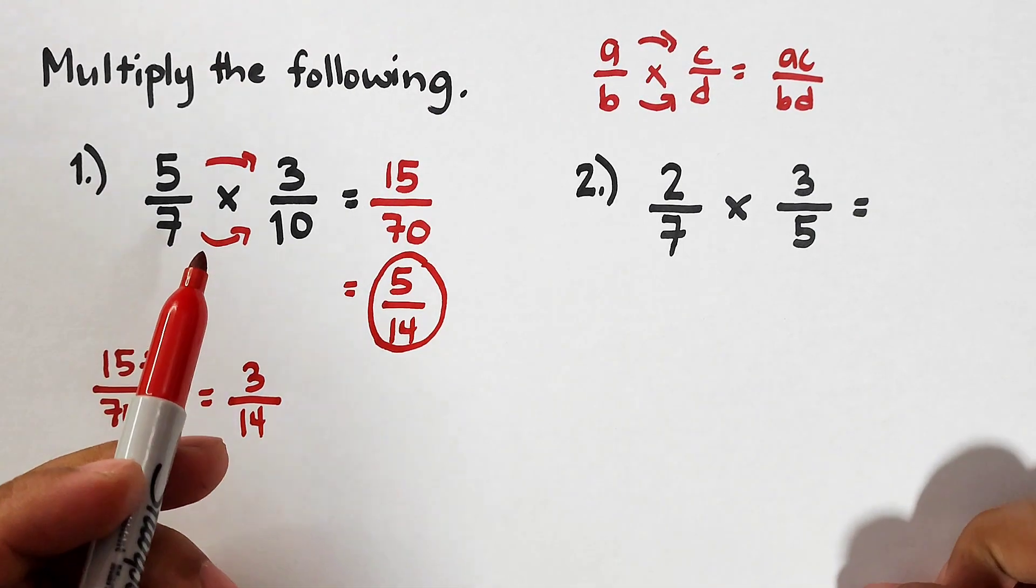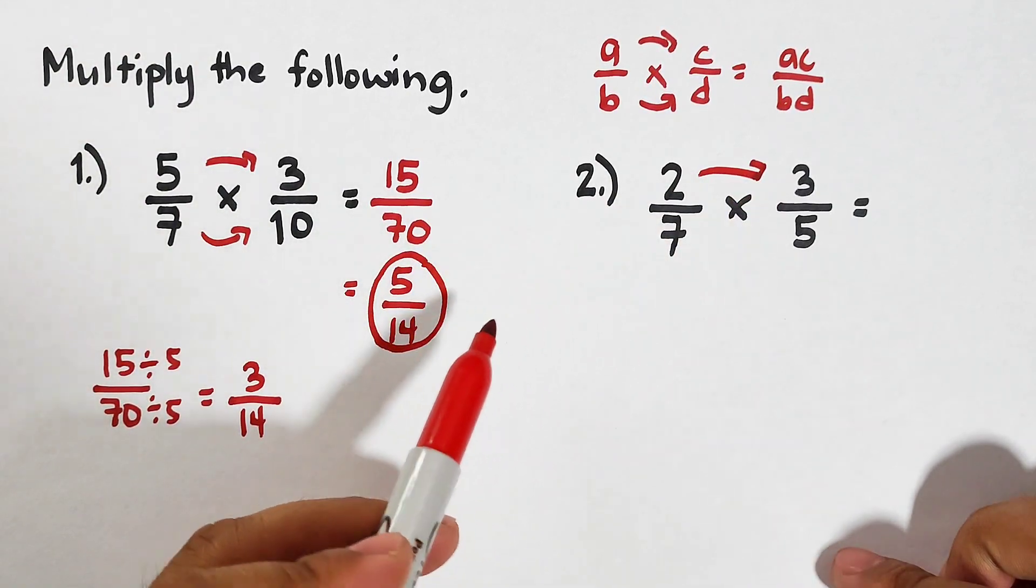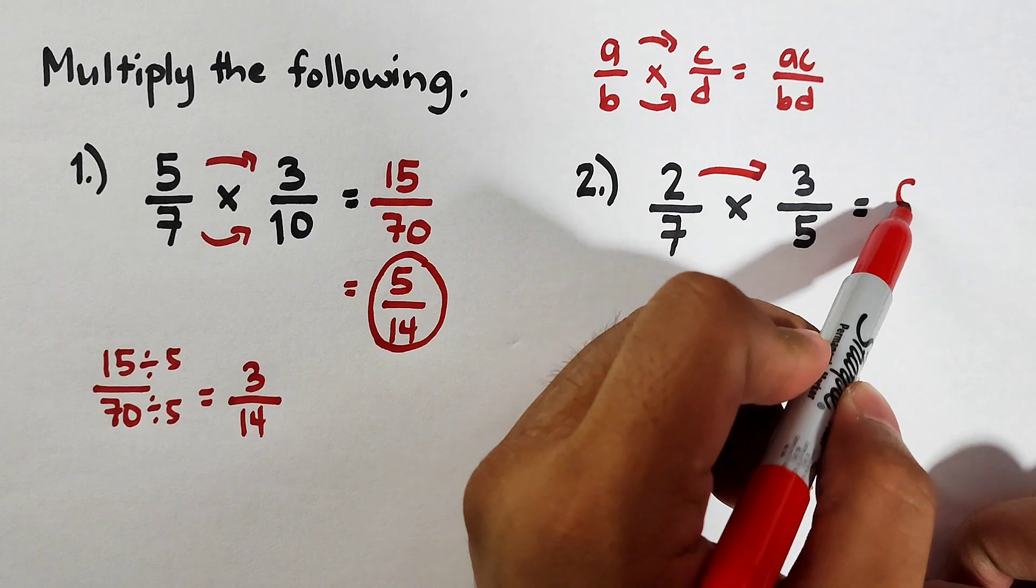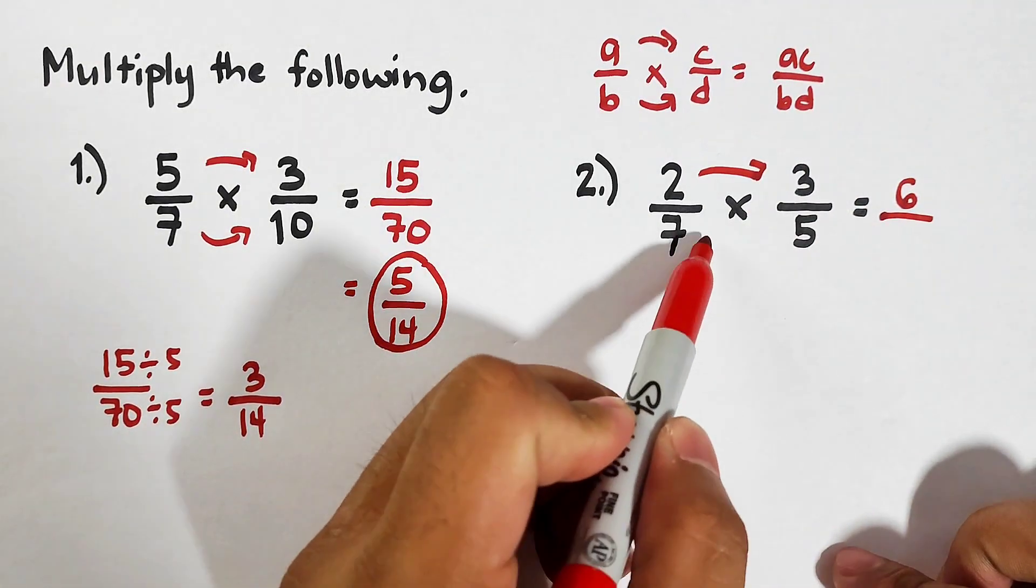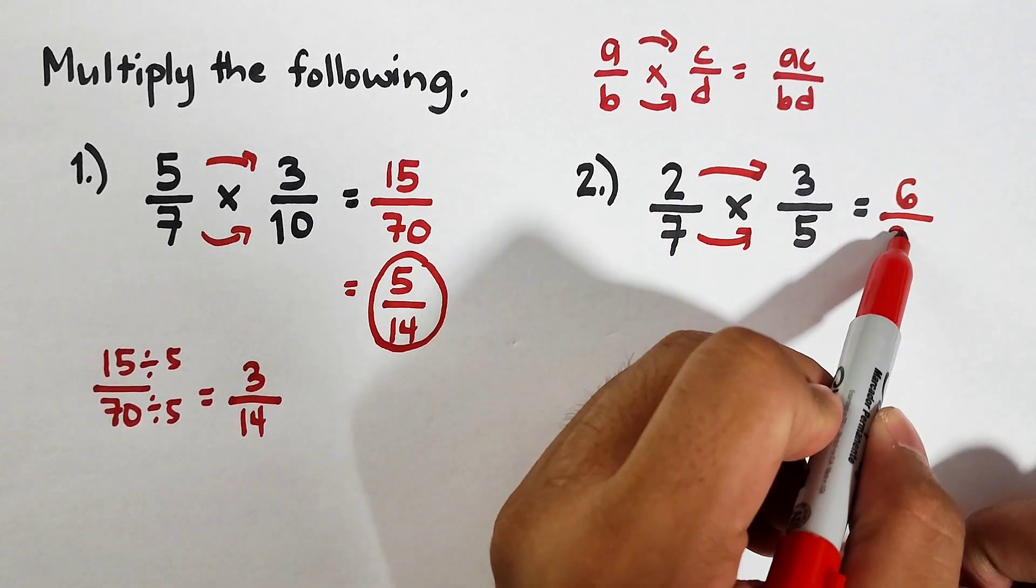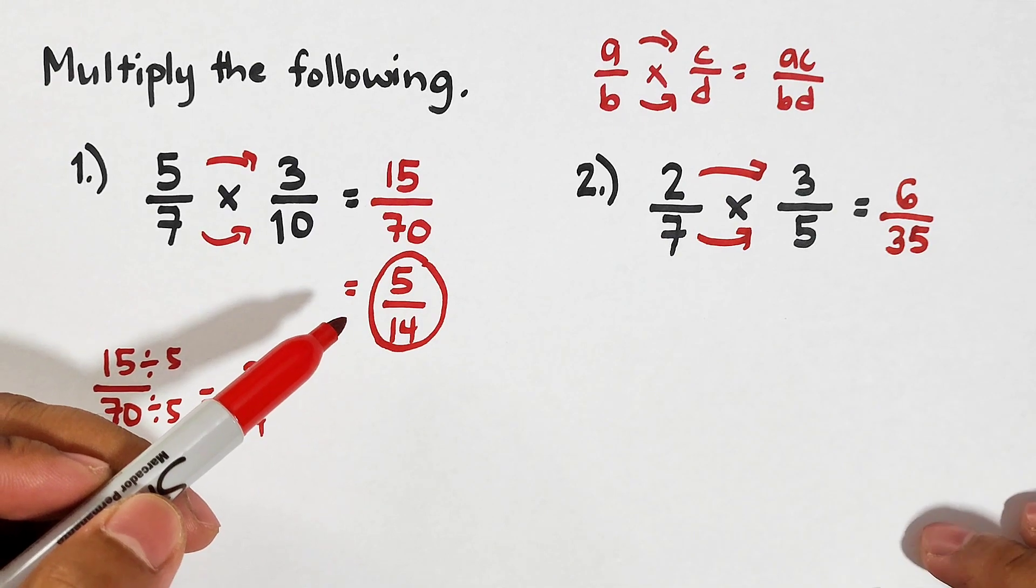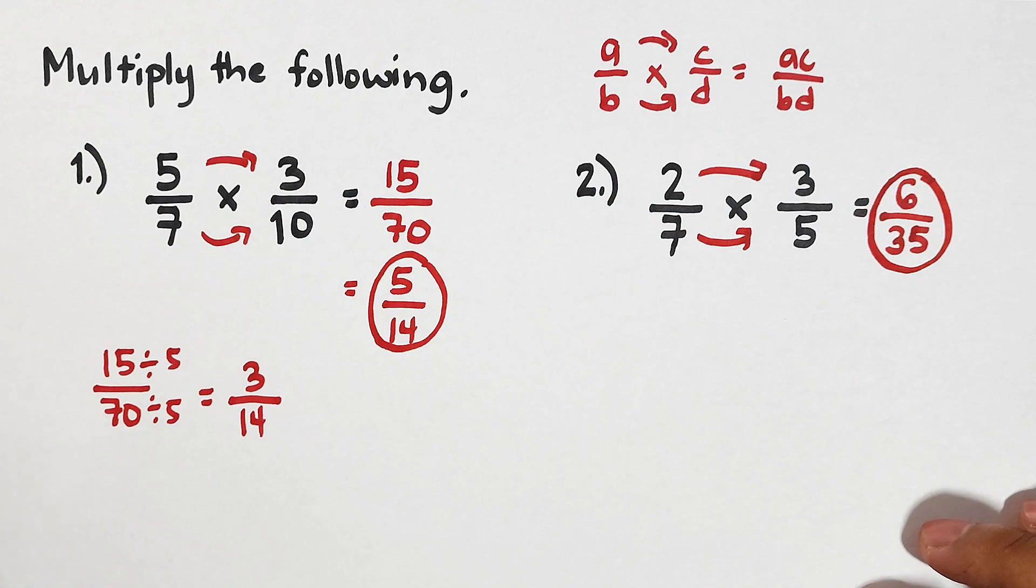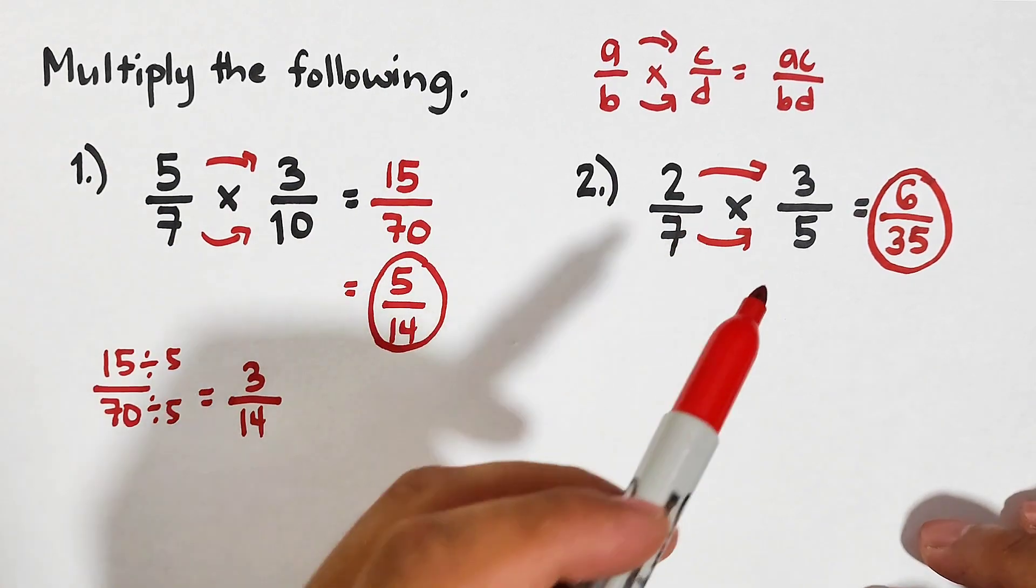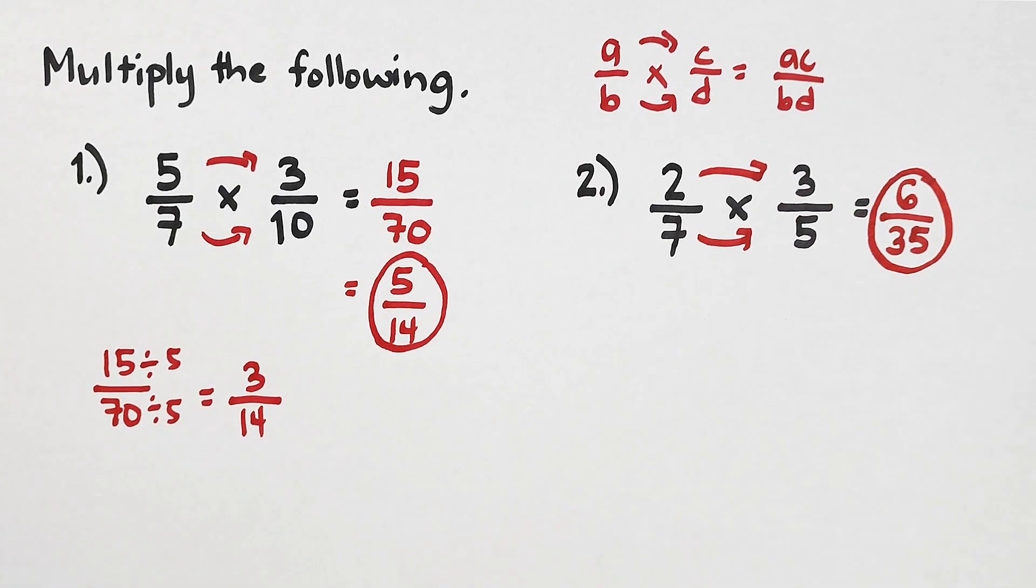Now let's move on with item number two. For number two, multiply the numerators: 2 times 3, that is equal to 6 over multiply 7 and 5, that is equal to 35. As easy as that. So as you can see, the product of the fractions 2/7 times 3/5 is 6 over 35.